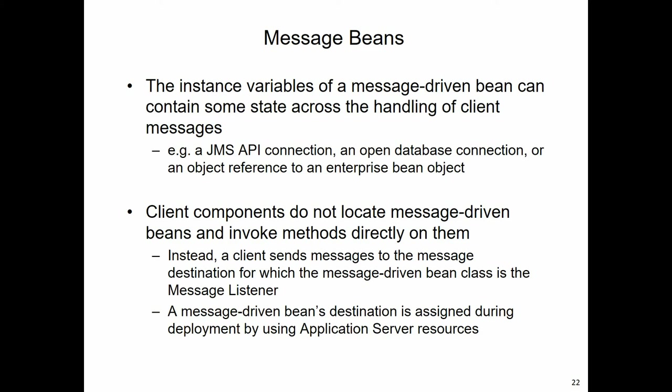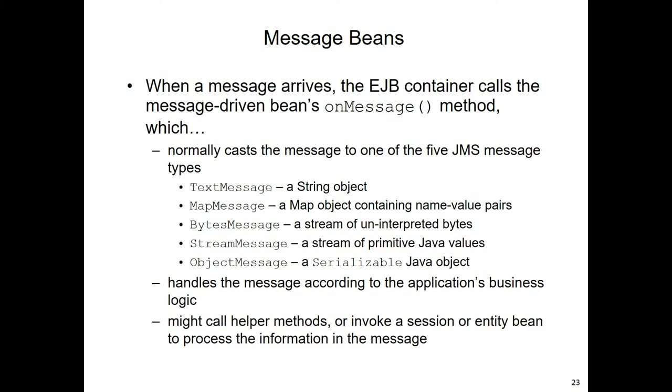Clients interact with the destination, and it's the destination that will decide to send a message to a bean. Which instance will be used is up to the container. When that message arrives, the container will call the onMessage method. That method has to process the message, and the message will be one of five different types. In the code we looked at, the producer and consumer were working with a text message. But there are four other types: a map message, a bytes message, a stream message, and an object message.